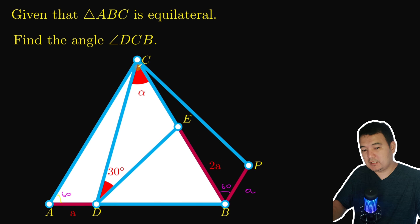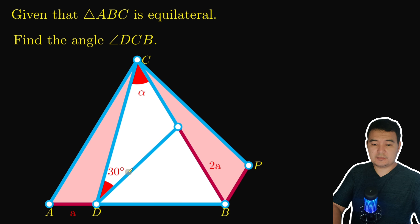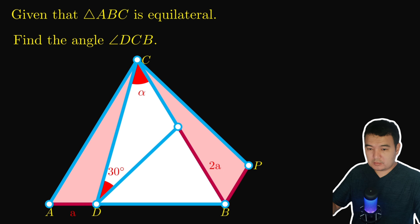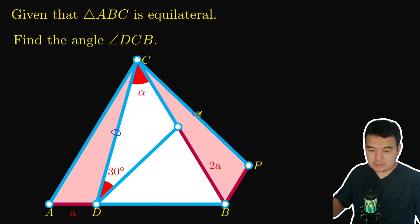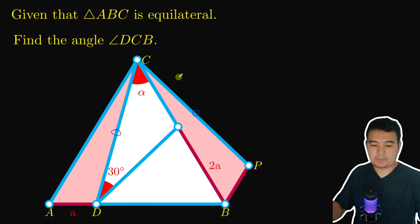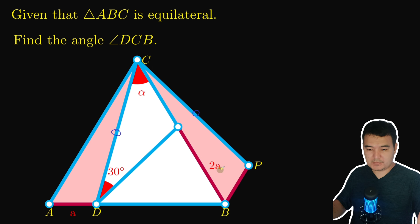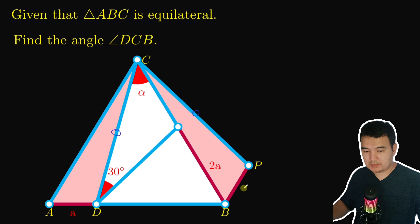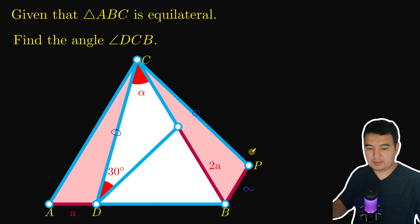One side is a side of the equilateral triangle. So these two triangles are congruent to each other by the Side-Angle-Side postulate. This also gives us the congruence of segments DC and CP.